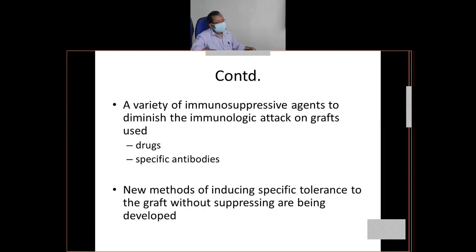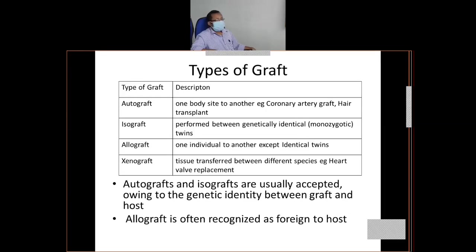The transplant may work for two years, maybe five years. In the book it is written that even with so much development, 10-year survival is only 50%. That means after 10 years, you have to do the organ transplant again. So this is very important — you might get short notes on what are the types of graft.